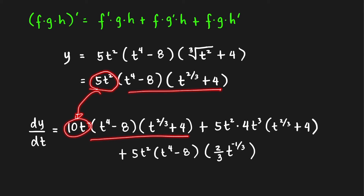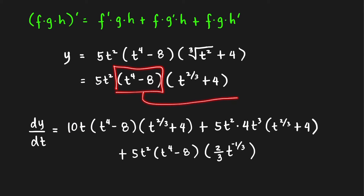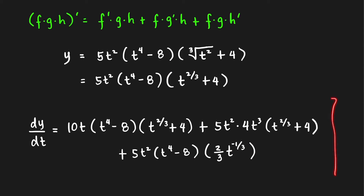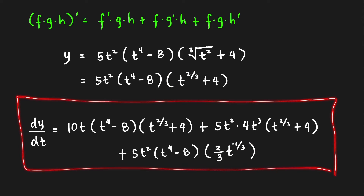Next, take the derivative of the second factor: the derivative is 4t³ − 0, so that is just 4t³. Copy the other factors. Then take the derivative of the third factor t^(2/3): bring down the power and subtract 1, giving t^(−1/3). Copy the other two factors. This is the derivative of y with respect to t.